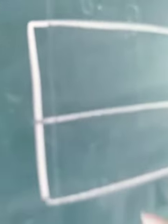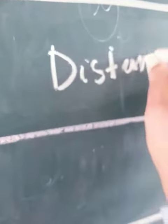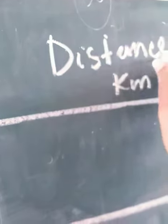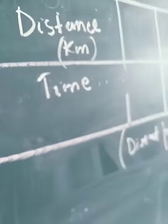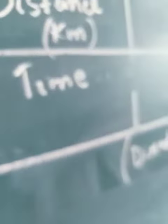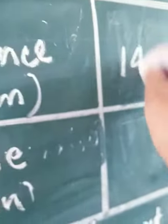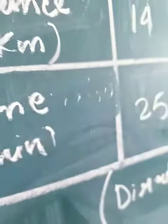The two topics we are discussing are distance and time. We'll write down the first topic: distance, which we're measuring in kilometers, and time. Two time units are mentioned—minutes and hours—so we'll keep it in minutes. According to the first sentence, when the distance is 14 kilometers, the time taken is 25 minutes.